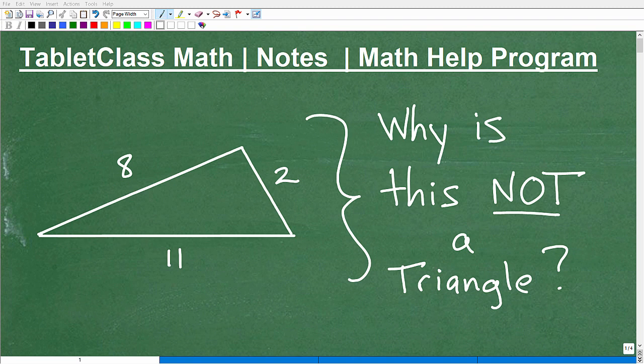Okay, let's talk about why this is in fact not a triangle. It certainly looks like a triangle. I mean, there's a triangle here and there's some values, but why is this not a triangle?